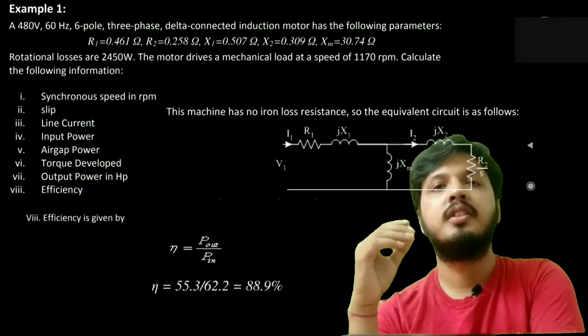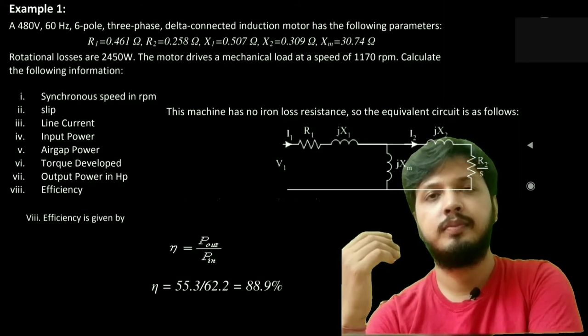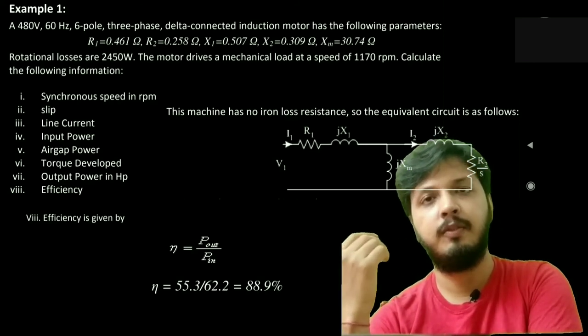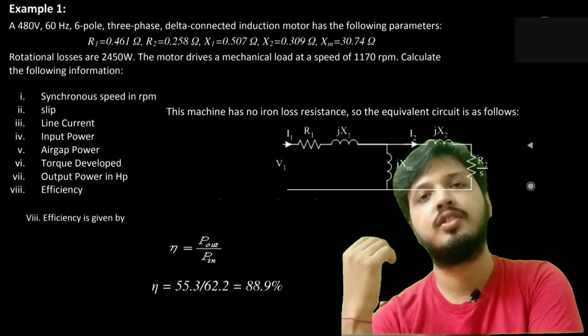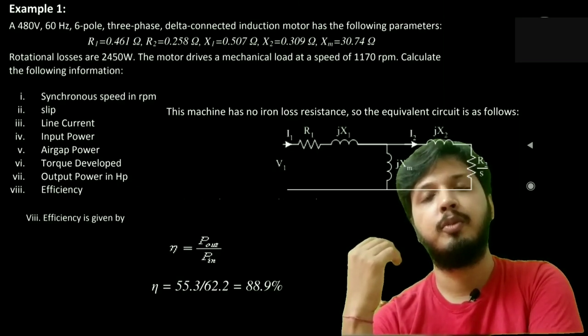The efficiency is given by P out by P input. P out we have already calculated, that's 55.3. P input we have already calculated, that's 62.2. Taking this ratio, we will find that it is 88.9 percent.